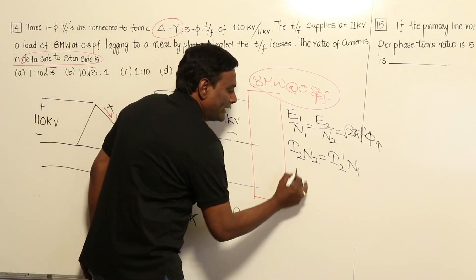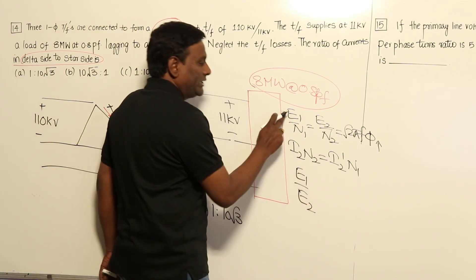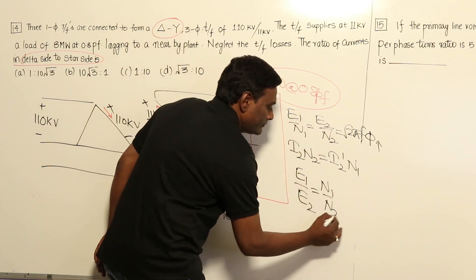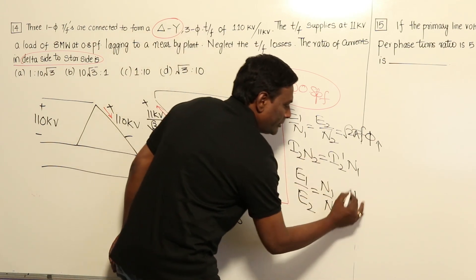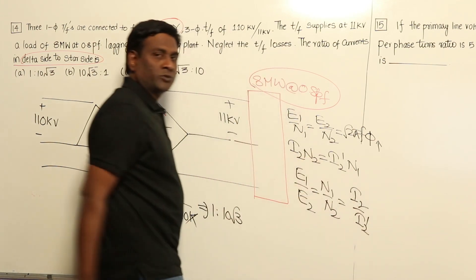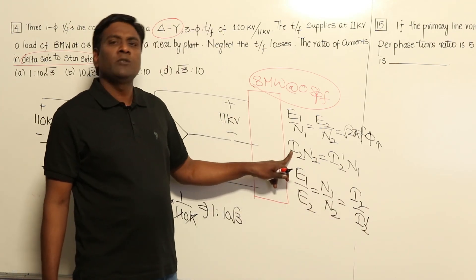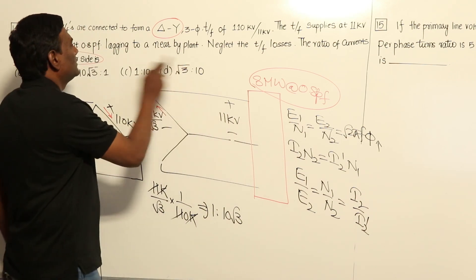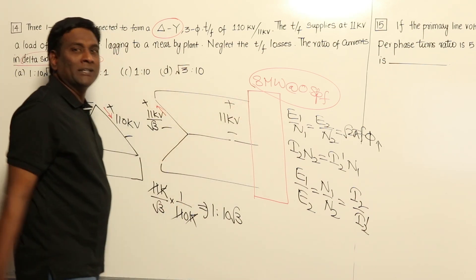The secondary MMF should be exactly compensated by the primary MMF. Combining these gives: E1/E2 = N1/N2 = I2/I1. So if you ask for currents in reverse, voltages work in the same way. Therefore, the 8 megawatts of load does not need to be considered at all for this ratio.